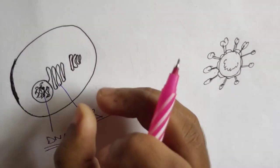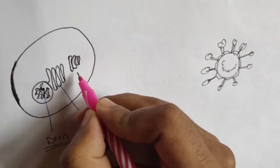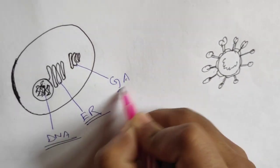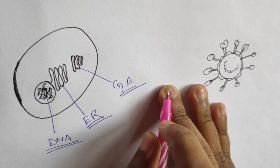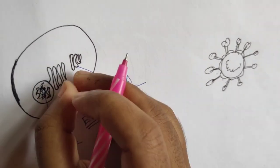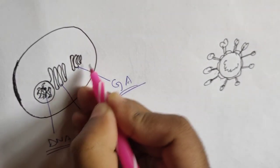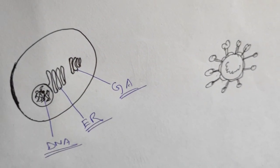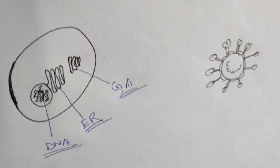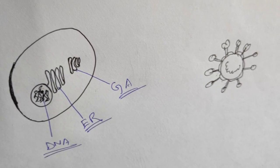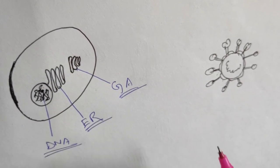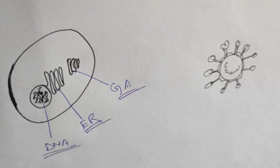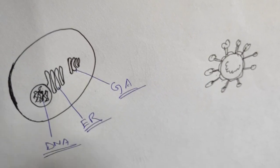There is also a pouch-like structure known as the Golgi apparatus, or Golgi body. Small vesicles fuse together to make it. It has a very crucial function: to store proteins and to direct them to their proper destination.